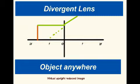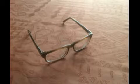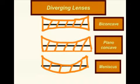Diverging lenses are used in spectacles to correct for short-sightedness. Diverging lenses may be biconcave, planoconcave or meniscal.